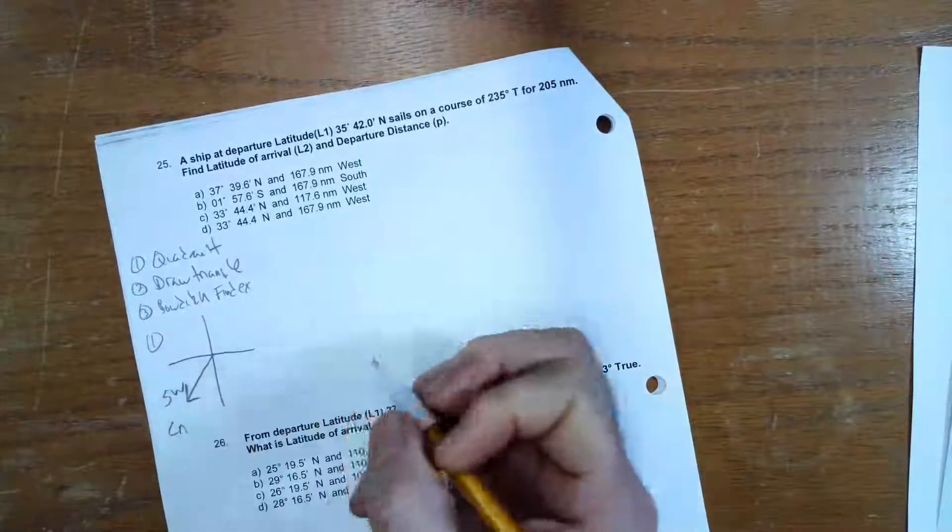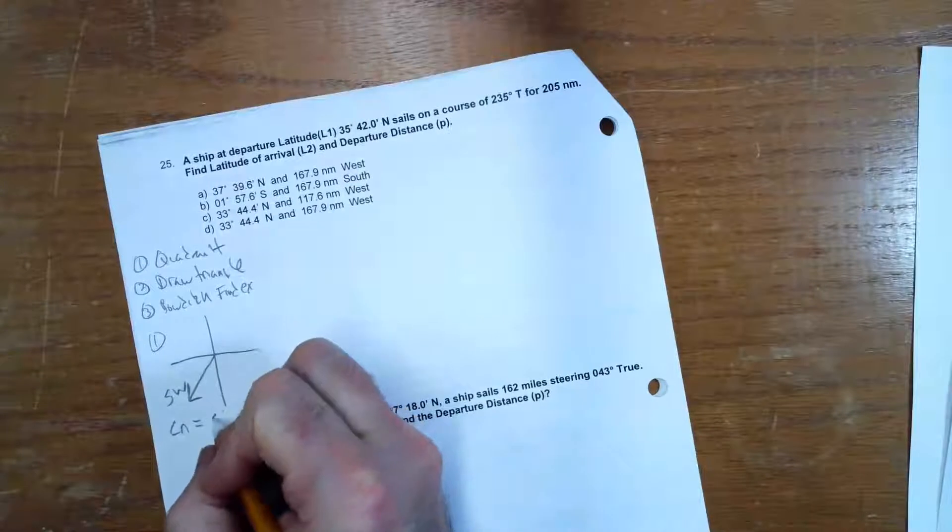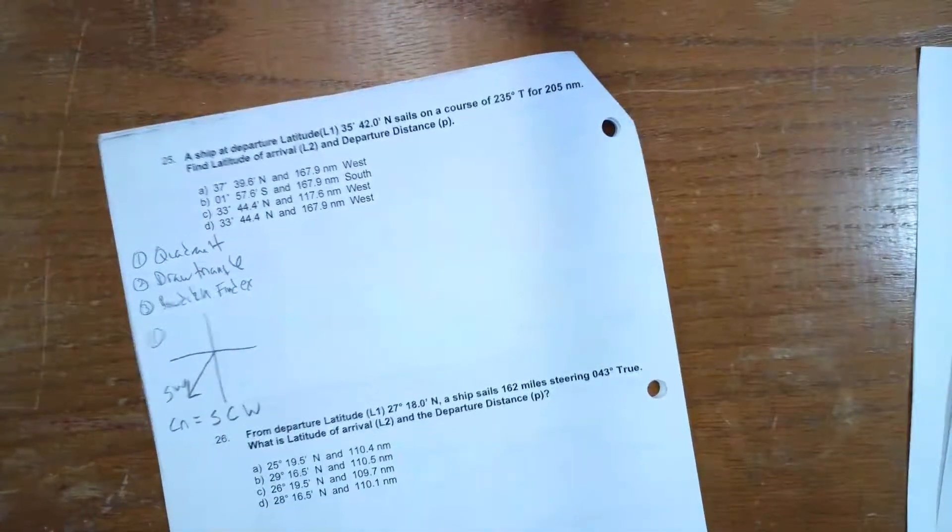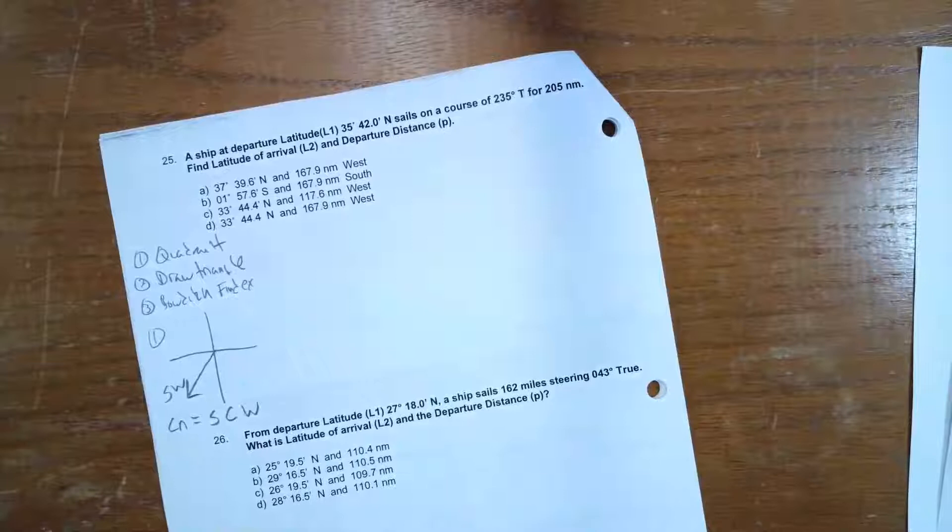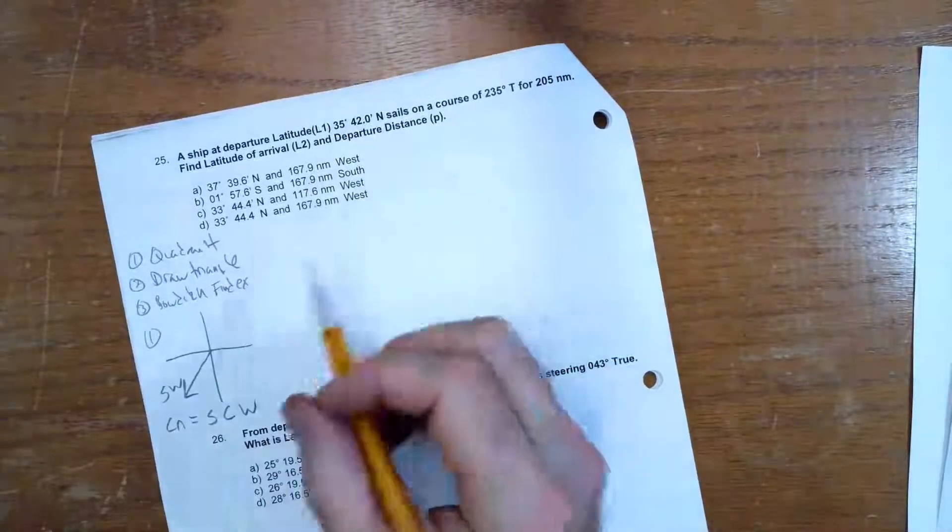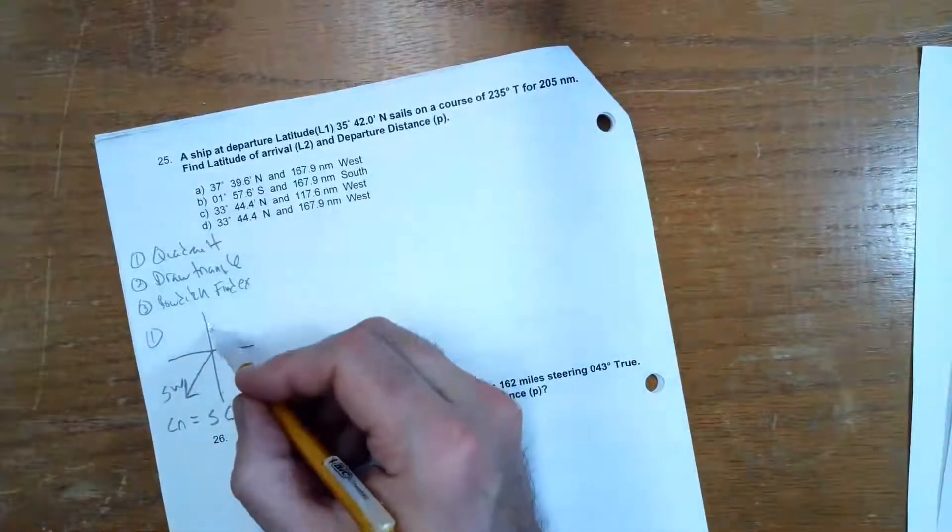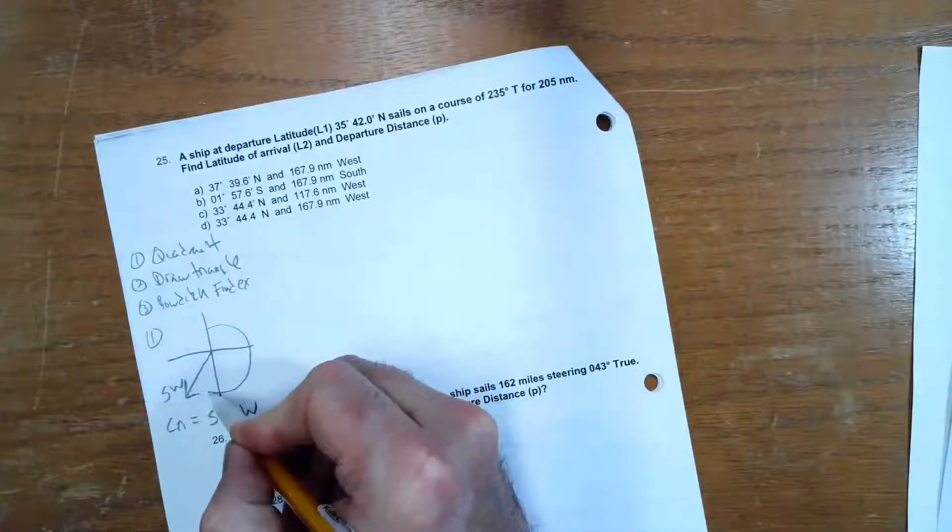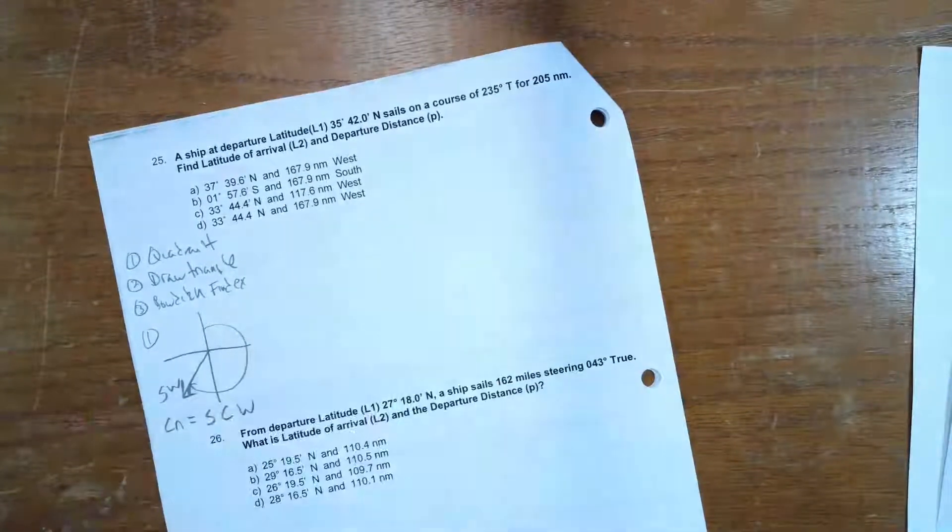So if I want to do some conversion of course angle and course, that would be course is going to be south C west. And I may want to use that later on. But this is certainly the 235° that I got. This is 235°.